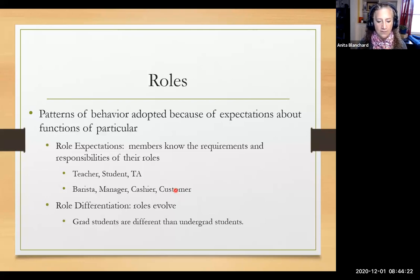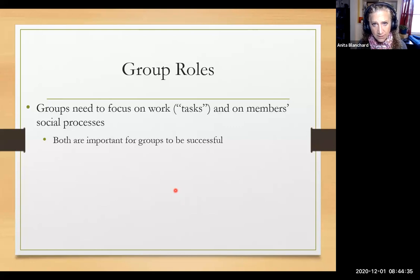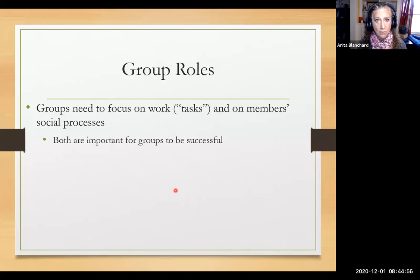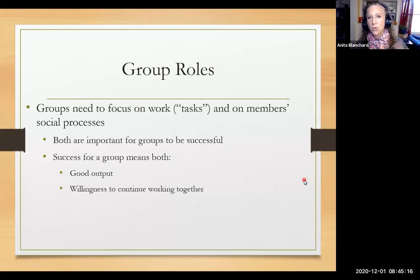Roles evolve as people move throughout the organization. Groups need to focus on both task and social processes — this is extremely important. Groups cannot just be task focused; they have to be socially focused and make sure the bonds between people are positive. We have task roles and social roles within the group. Success for a group means that both the group output is good and the people are willing to work together again in the future. If you don't have both of those, the group was not a success.